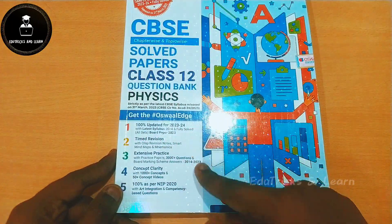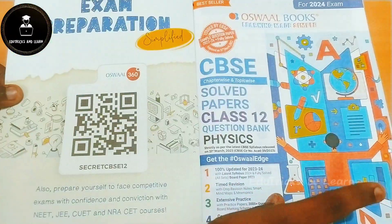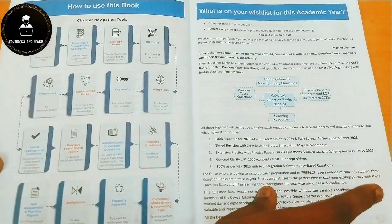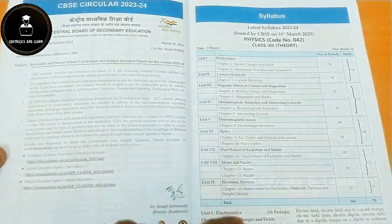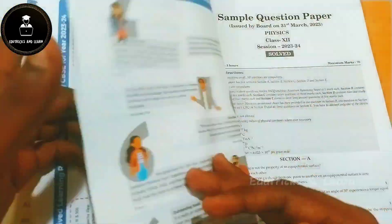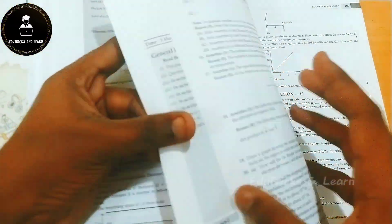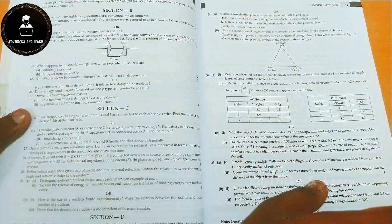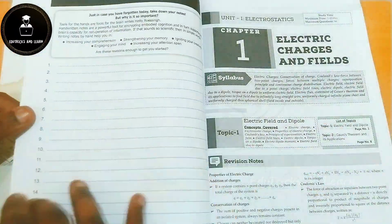Now in this video we are going to see deeper about the CBC Oswaal paper class 12 question bank of Physics and Biology. For Physics, they start with complete contents and how to use this book — they have given some manuals. They have given the CBC circular and new updated version of the 2024 syllabus with the reduced syllabus, a sample question paper for the 2024 board exam, and the solved paper of the 2023 board exam. Previous year board exam questions are given separately with answers provided after the questions.